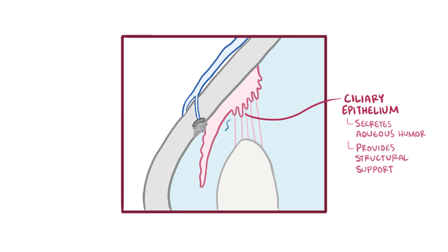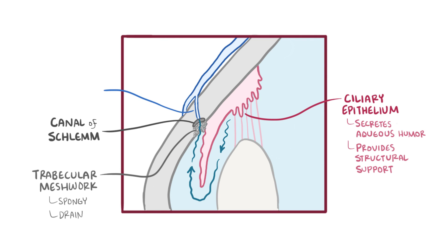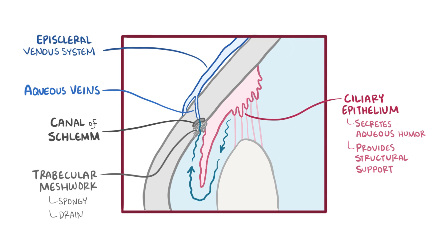That fluid is secreted into the posterior chamber, and then flows through a narrow space between the front of the lens and the back of the iris through the pupil to the anterior chamber. From there, the fluid flows out of the eye through the trabecular meshwork, which is a spongy tissue that acts like a drain, and this allows the fluid to go down into a circular channel called the canal of Schlemm, and finally into the aqueous veins, which are part of the episcleral venous system, the veins around the sclera of the eye.